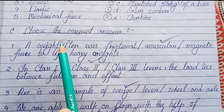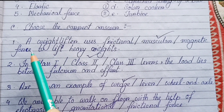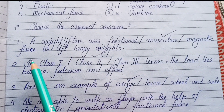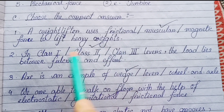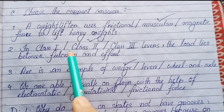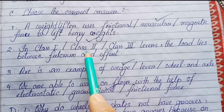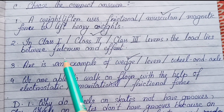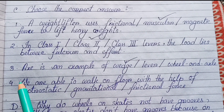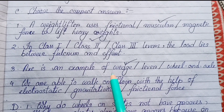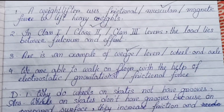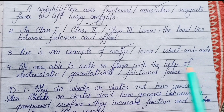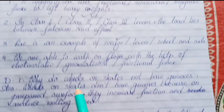Choose the correct answer. Number one: A weight lifter uses muscular force to lift heavy weights. Number two: In class two levers, the load lies between the fulcrum and effort. Number three: An axe is an example of a wedge. Number four: We are able to walk on the floor with the help of frictional force.